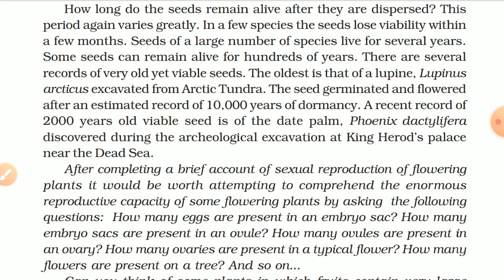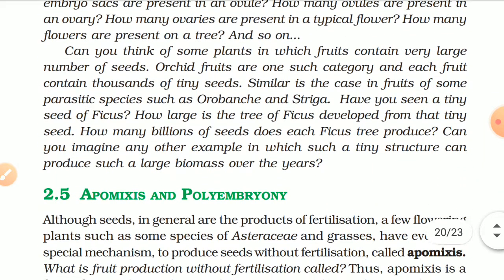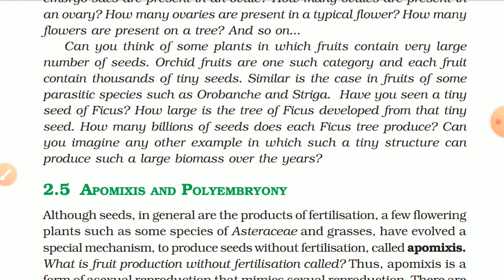After completing a brief account of sexual reproduction in flowering plants, it is worth comprehending the enormous reproductive capacity of some flowering plants. Consider: how many eggs are present in the embryo sac? How many embryo sacs are in an ovule? How many ovules in an ovary? How many ovaries in a typical flower? How many flowers on a tree? Orchid fruits are one such example — each fruit contains thousands of tiny seeds. Similar is the case for fruits of some parasitic species such as Orobanche and Striga. Have you seen the tiny seed of Ficus? How large is the tree of Ficus developed from that tiny seed, and how many billions of seeds does each Ficus tree produce?